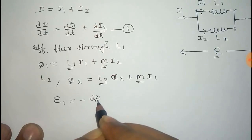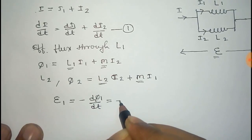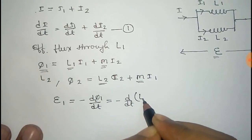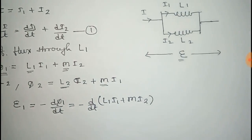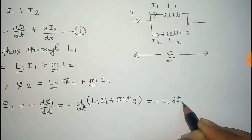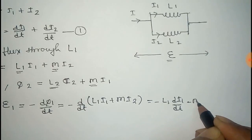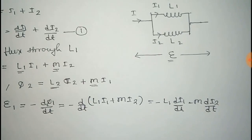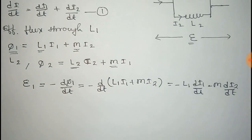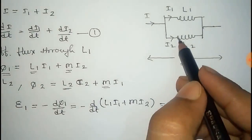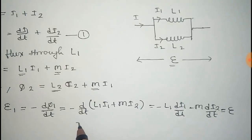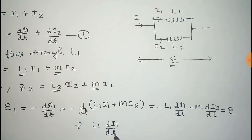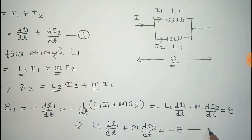The EMF e1 across L1 equals d(phi1)/dt. Substituting the value of phi1 = L1·i1 + M·i2, and since L1 and M are constants, we get e1 = minus L1·(di1/dt) minus M·(di2/dt). Since e1 equals the applied EMF e, we rearrange to get: L1·(di1/dt) + M·(di2/dt) = minus e. Take this as equation number two.